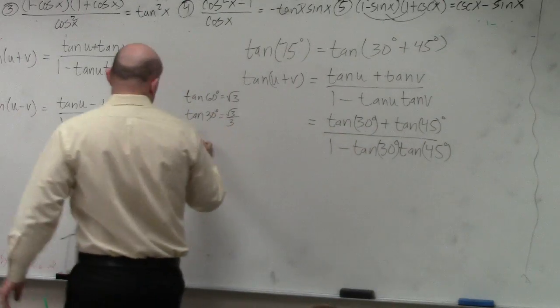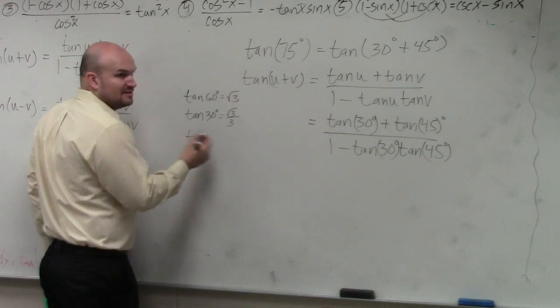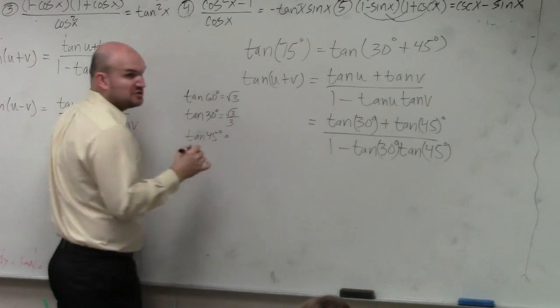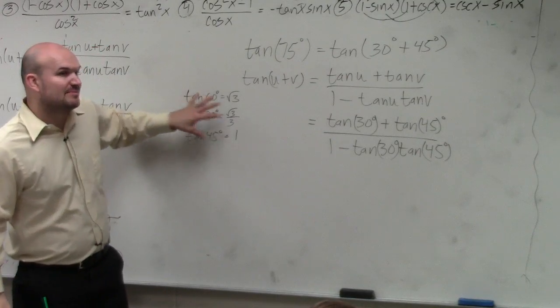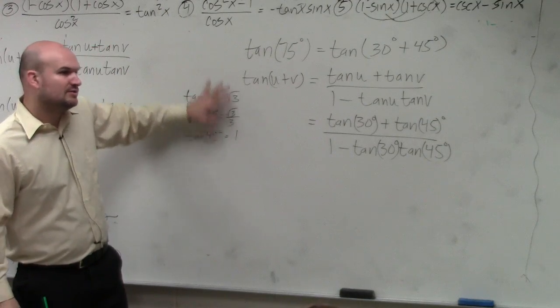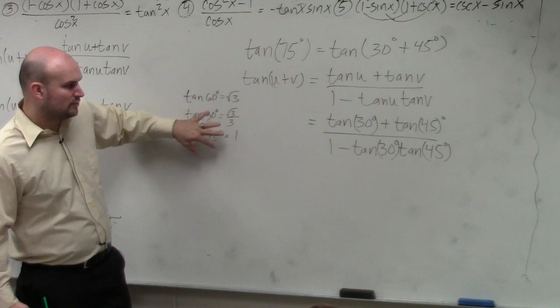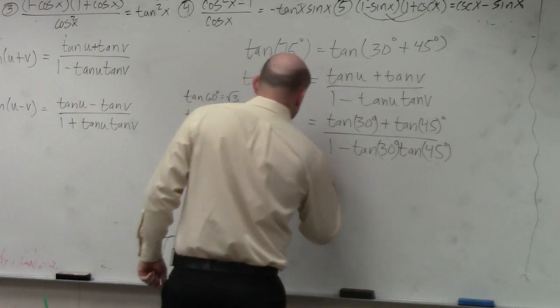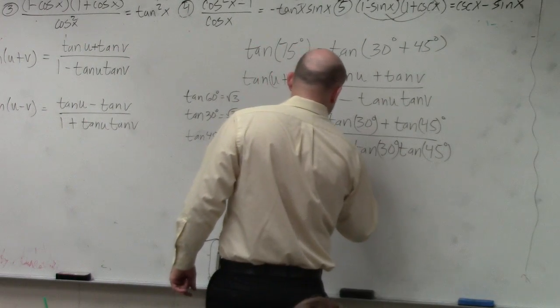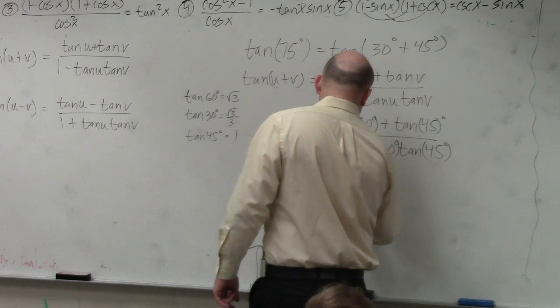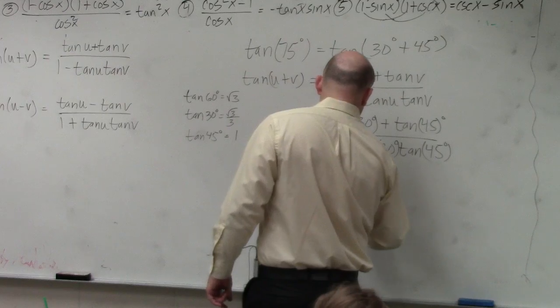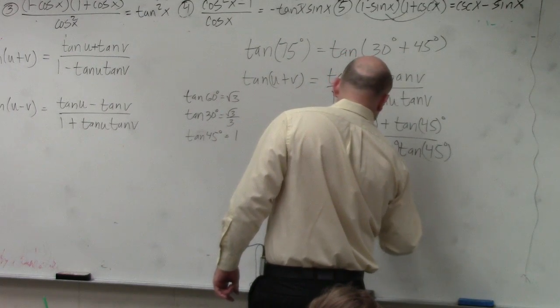Well, tangent of 45 degrees, that one's the easiest, right? Because that's the same number, right? So square root of 2 over 2 over square root of 2 over 2. So that's just 1. So you guys want to make sure you remember these real easily. These are obviously only for the fourth quadrant. So tangent of 30 degrees is square root of 3 over 3. Plus tangent of 45 degrees is 1 over 1 minus square root of 3 over 3 times 1.